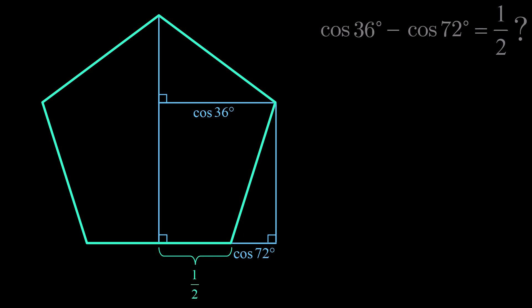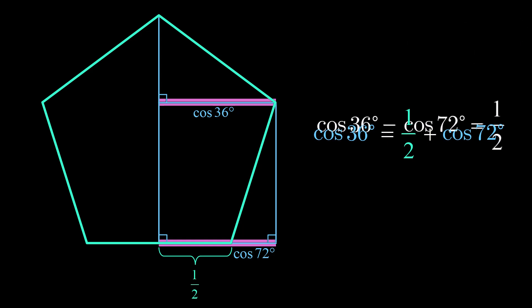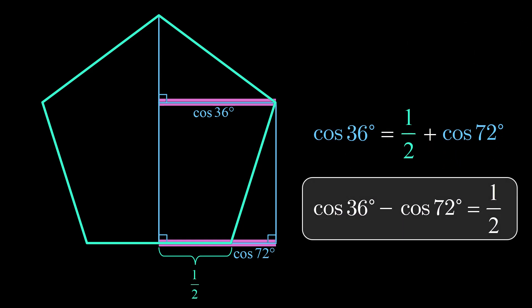Finally, notice that our segment length of cos 36 degrees is equal to half of the pentagon's side length plus our segment length of cos 72 degrees. That is, cos 36 degrees equals one half plus cos 72 degrees. Or, as we wish to show, cos 36 degrees minus cos 72 degrees equals one half.